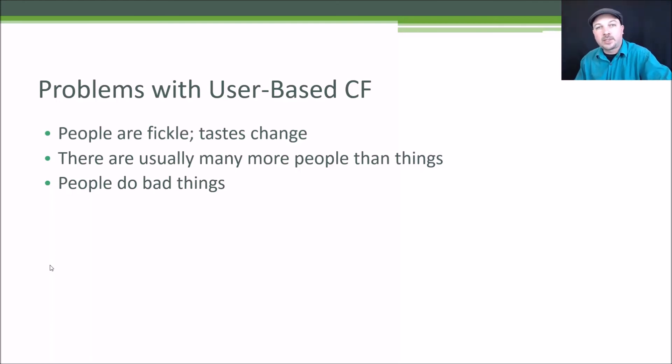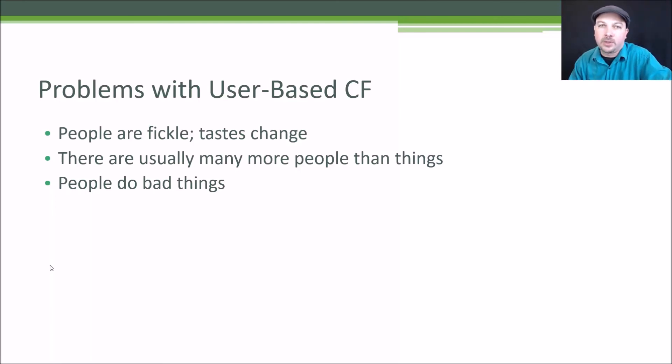There is research on detecting and avoiding shilling attacks in user-based collaborative filtering, but an even better approach is to use a totally different technique that's not so susceptible to gaming the system. That's user-based collaborative filtering in summary — you look at similarities between users based on behavior and recommend stuff a similar user enjoyed that you haven't seen yet. Next, let's talk about flipping the whole thing on its head with item-based collaborative filtering.